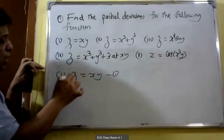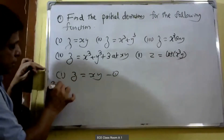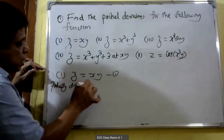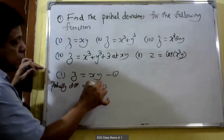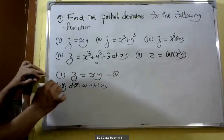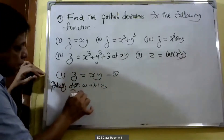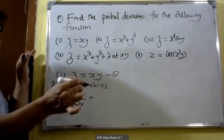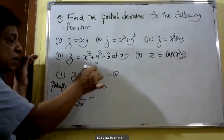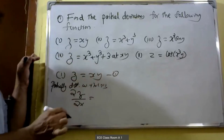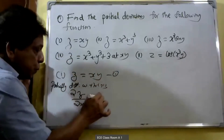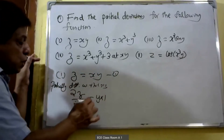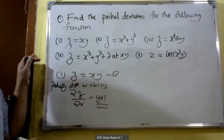We are partially differentiating with respect to x, then we get ∂z/∂x. When we are partially differentiating with respect to x, the other variable y is treated as constant. Therefore y into derivative of x. Derivative of x is equal to 1. Therefore ∂z/∂x is equal to y.